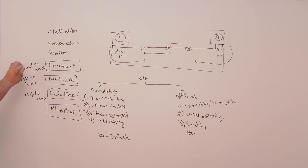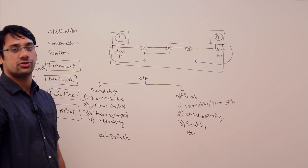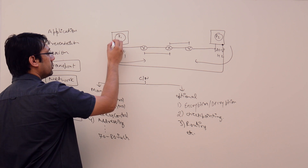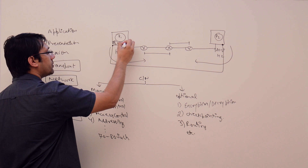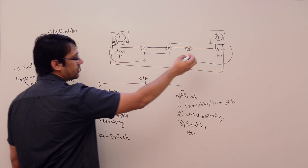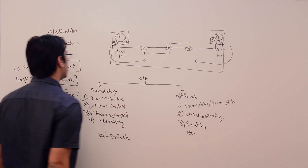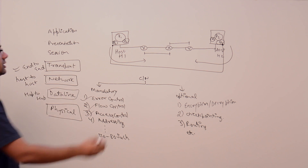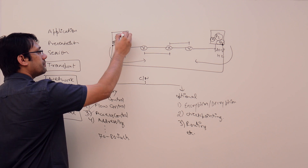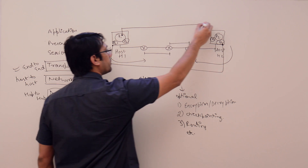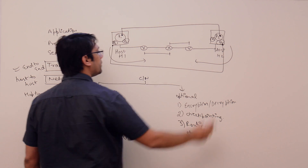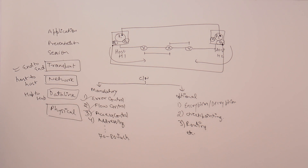End-to-end connectivity deals with process-to-process connectivity. A host may have more than one process — P1, P2, P3 — and the other host similarly. When we want to send data from process P1 to process P2 on the other host, the Transport layer takes care of delivering the data to the correct process or port. We will discuss all these things in detail later.